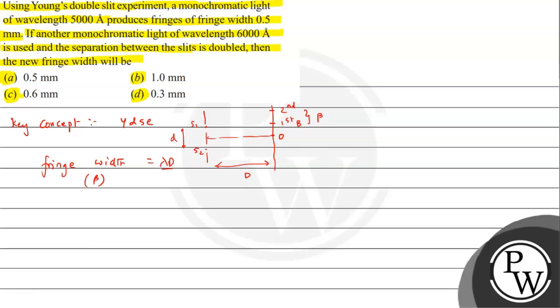It is given by the expression lambda capital D upon small d. In the situation we have given, we need to find out the new fringe width. Here we can see that beta has changed - the wavelength and the separation between the slits have also been changed.